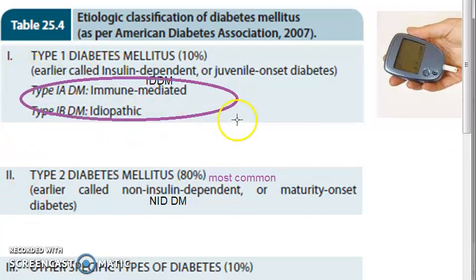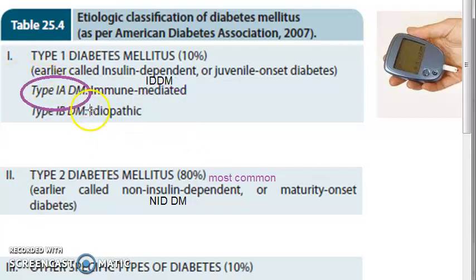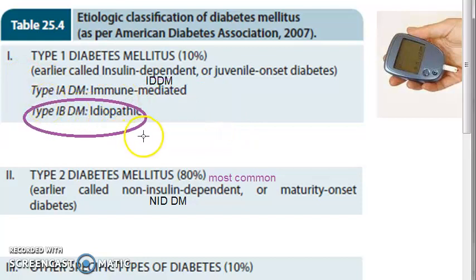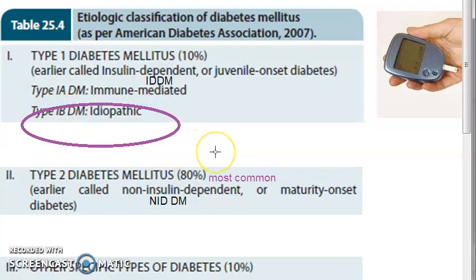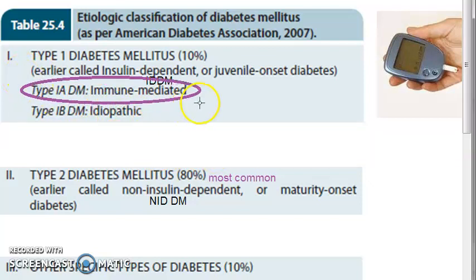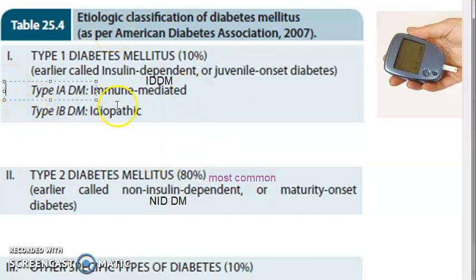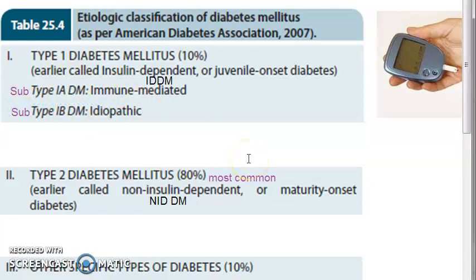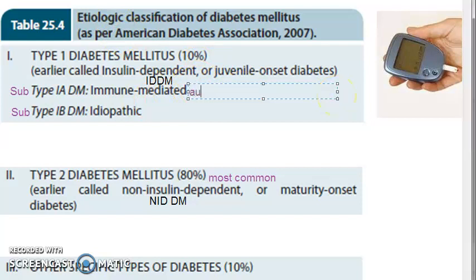There are two subtypes: type 1a diabetes mellitus and type 1b diabetes mellitus. Type 1a is immune mediated and type 1b is idiopathic - meaning the cause is not known. Subtype 1a, the immune mediated type, is characterized by autoimmune destruction of beta cells, which usually leads to insulin deficiency.